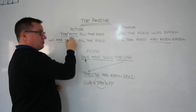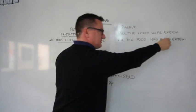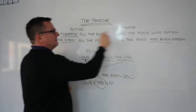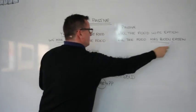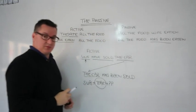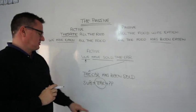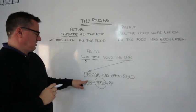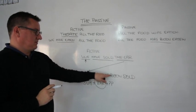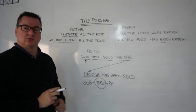Remember, the main verb goes into the past participle — 'eaten.' But here you've added the verb 'to be.' 'The car has been sold.' Subject, the verb 'to be' in the present perfect, past participle — 'sold.'